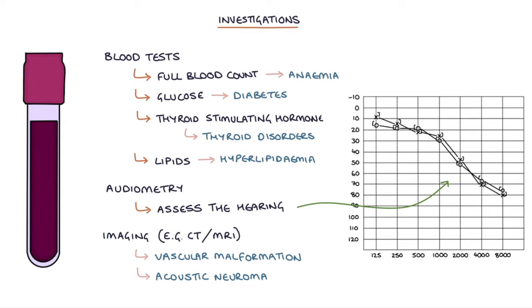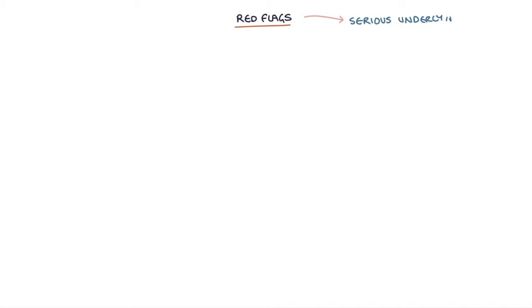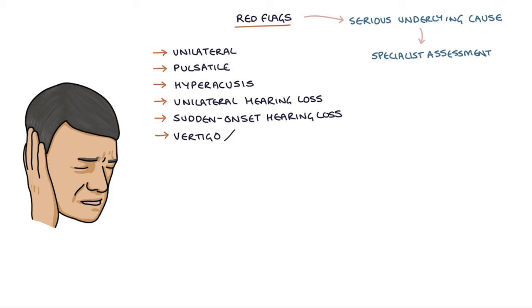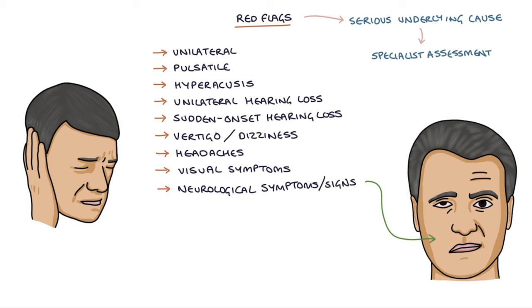Let's talk about the red flags that could indicate a serious underlying cause for the tinnitus. These red flags would indicate the need for a specialist assessment, and they include unilateral tinnitus, pulsatile tinnitus, hyperacusis, which is hypersensitivity, pain or distress with the environmental sounds, associated unilateral hearing loss, associated sudden onset hearing loss, associated vertigo or dizziness, headaches or visual symptoms, associated neurological symptoms or signs, for example a facial nerve palsy or signs of a stroke, and suicidal ideation that's related to the tinnitus.